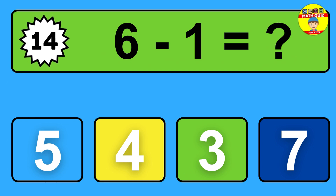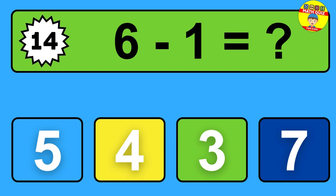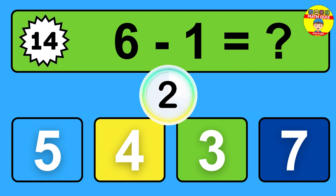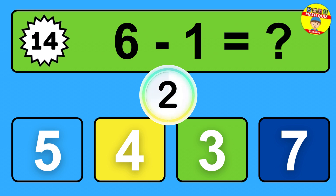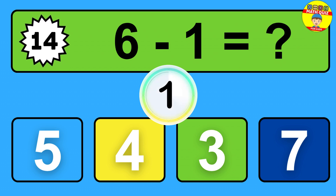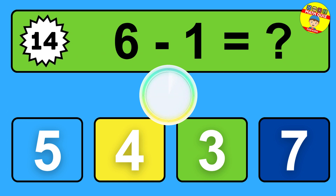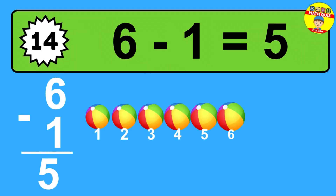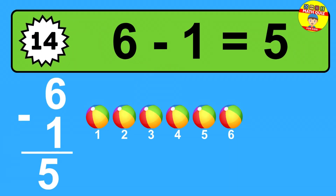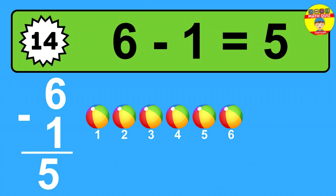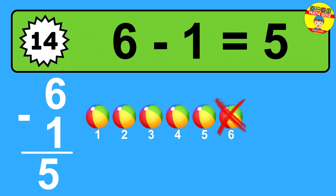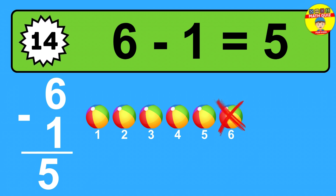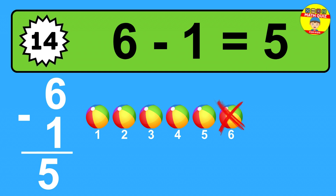Question fourteen: six minus one equals what? The answer is six minus one is five. Let's count it: one, two, three, four, five.